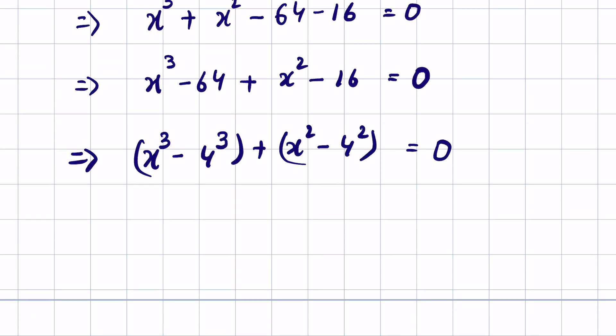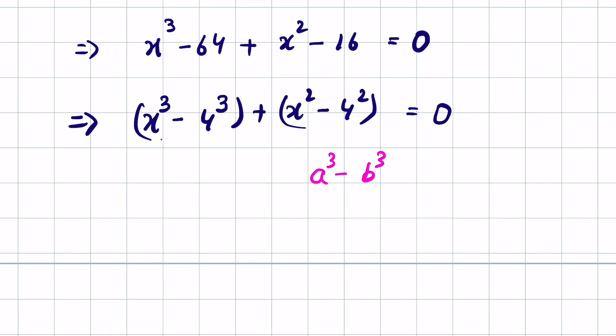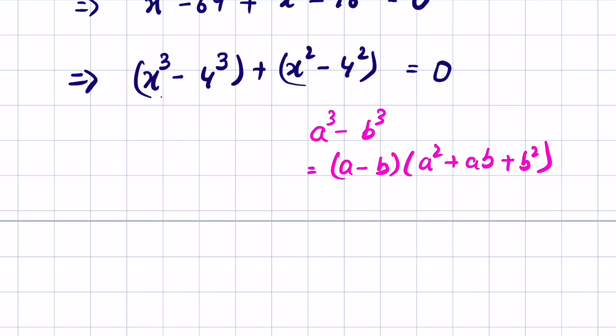Now this is in the form of a³ - b³, and this algebraic expression we can expand as (a - b)(a² + ab + b²). And this term is in the form of a²